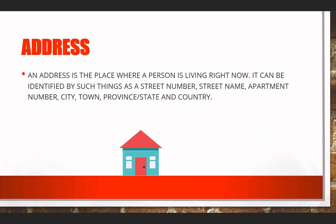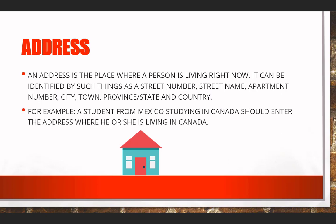Address: an address is a place where a person is living right now. It can be identified by such things as a street number, street name, apartment number, city, town, province, or state and country. For example, a student from Mexico studying in Canada should enter the address where he or she is living in Canada.